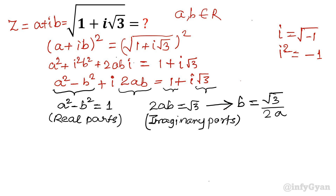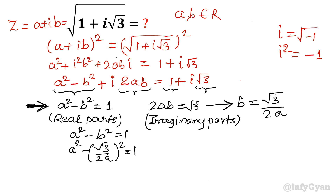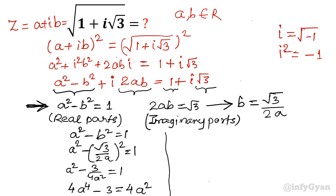This value I am going to put in the real parts equation. So a squared minus b squared equals 1. Put b equal to root 3 over 2a. So a squared minus 3 over 4a squared equals 1. Multiply both sides by 4a squared, giving the equation 4a to the power 4 minus 4a squared minus 3 equals 0.